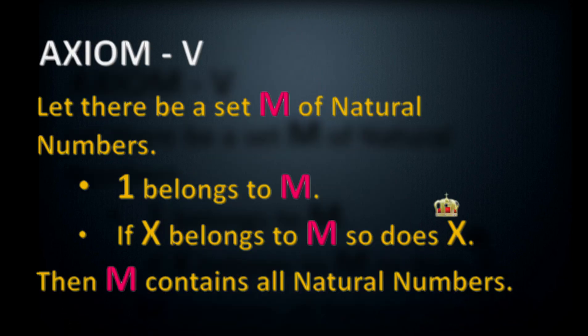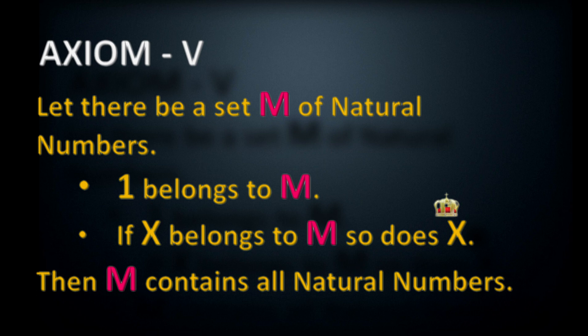Before I explain the axiom, let me state it. The axiom of induction states: let there be a set M of natural numbers with two properties — one is in the set, and if x belongs to set M, then so does the successor of x. If these two conditions are satisfied, we can say that all natural numbers are contained within the set M.